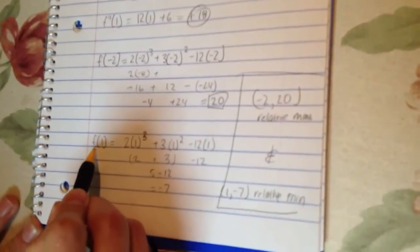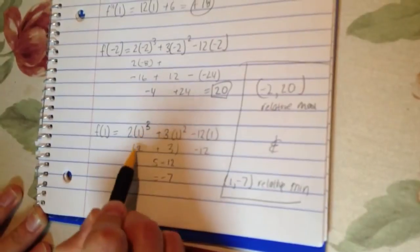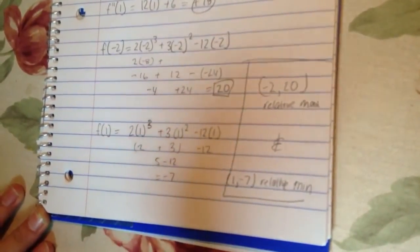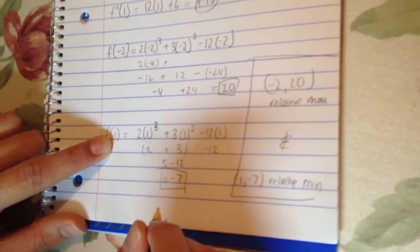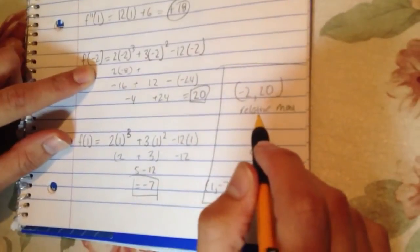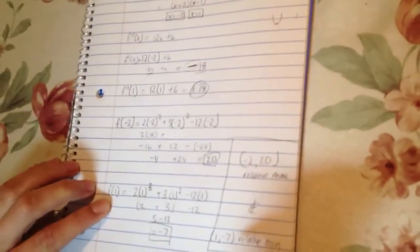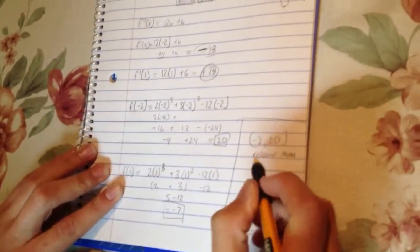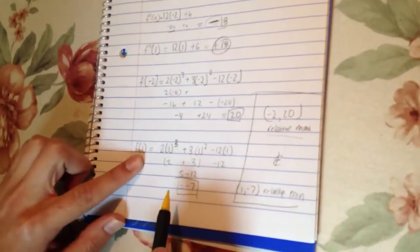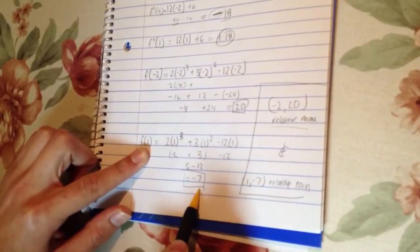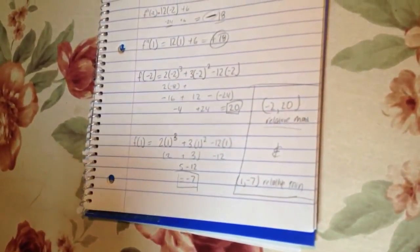Same thing right here, pretty simple stuff, just f of 1 putting into this function right here, you just solve, and you're left with negative 7 when you have the x value of 1. So at the value of negative 2 right here, we knew that that was the relative maximum, that's what we figured out up there, and at 1 you have a relative minimum, and so using those points, negative 2 and 20 is your relative max, x value, y value is 1, negative 7 for a relative minimum, and there you go.